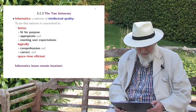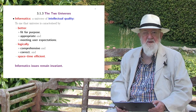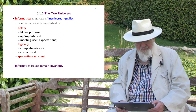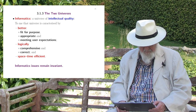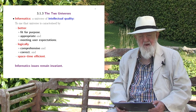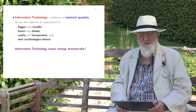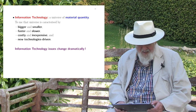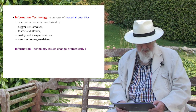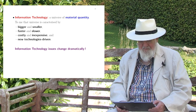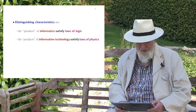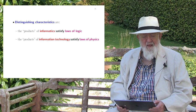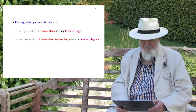To me, informatics is a universe of intellectual quality, characterized by better logical and space-time efficiency — better as fit for purpose, appropriate and meeting user expectations, logically comprehensive and correct. Informatics and information technology's use remains invariant, more or less, over time. In contrast, information technology is a universe of material quality or quantity. That universe is characterized by bigger and smaller, faster and slower, costly and inexpensive, and new-technology-driven. So information technology, IT, changes dramatically. Some distinguishing characteristics: the products of informatics satisfy laws of logic, whereas the products of information technology satisfy laws of physics.